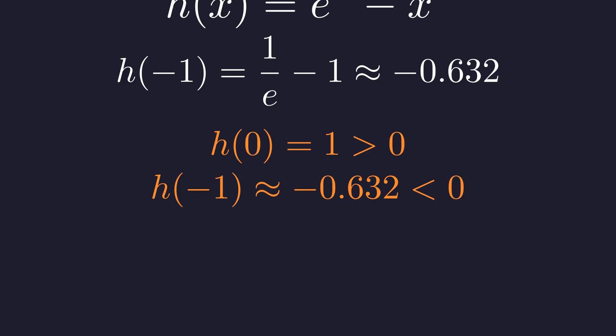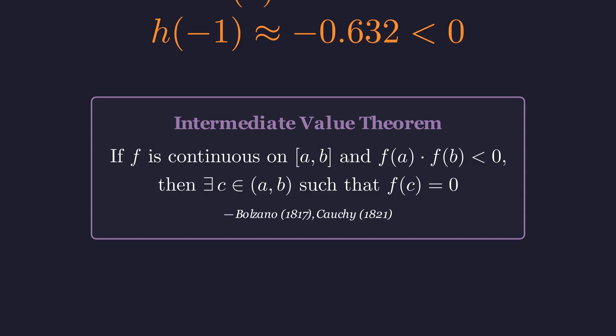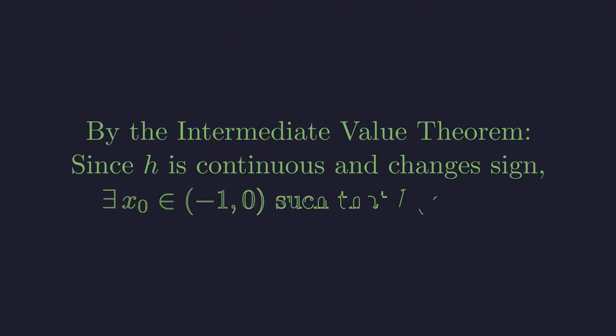The intermediate value theorem states that if a continuous function changes sign over an interval, it must cross 0 somewhere in that interval. Since our function h is continuous everywhere, being the difference of two continuous functions, and it changes from positive to negative, there must be at least one 0 crossing. Therefore, there must be at least one point between negative 1 and 0 where h crosses 0.